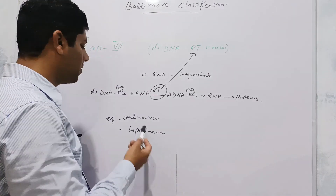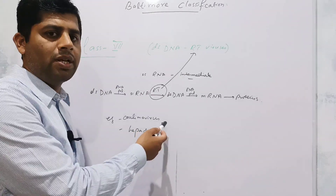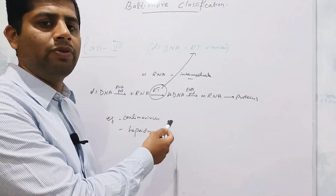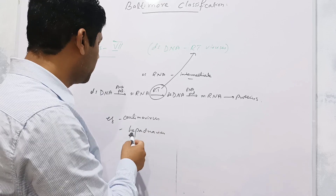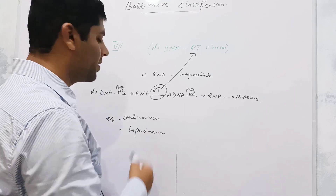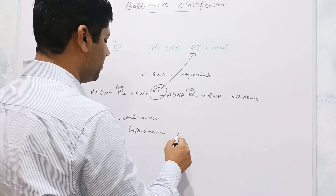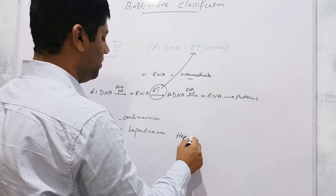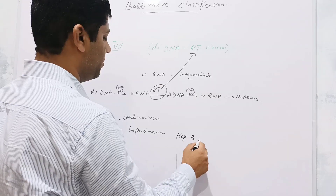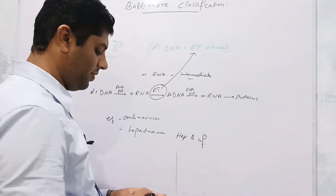Common examples of Class VII are Caulimovirus, also called cauliflower mosaic virus, and Hepadnavirus, which causes Hepatitis B infection — inflammation of the liver.